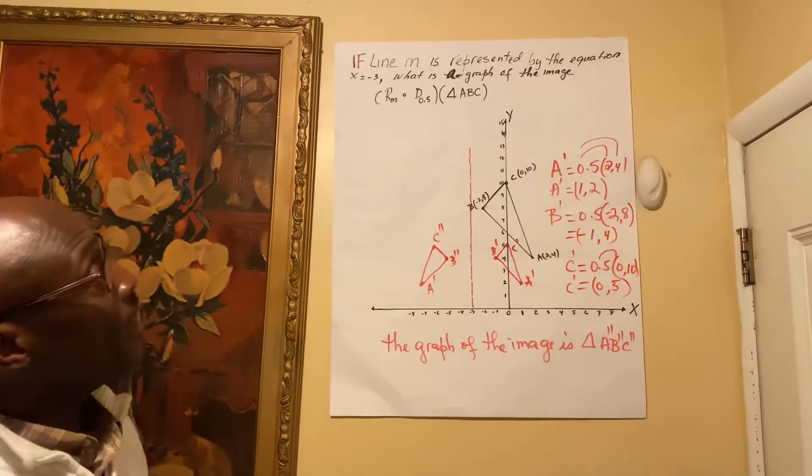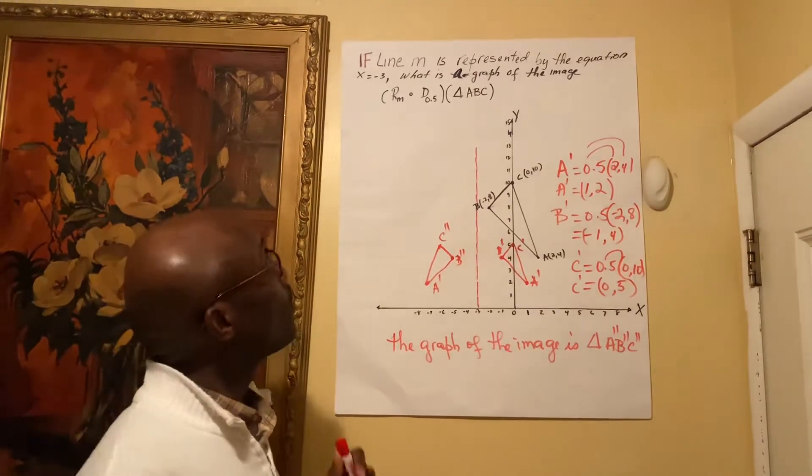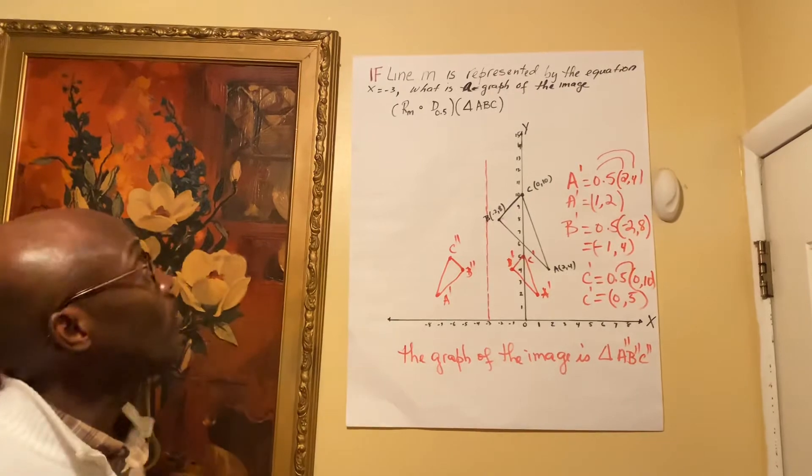If line M is represented by the equation x equals negative 3, what is the graph of the image?